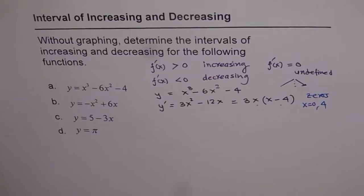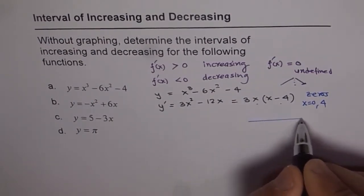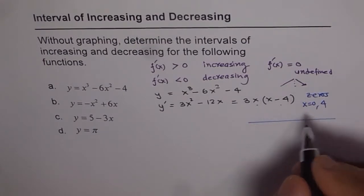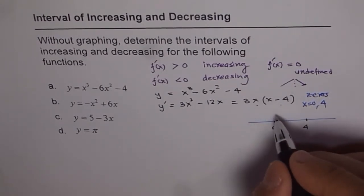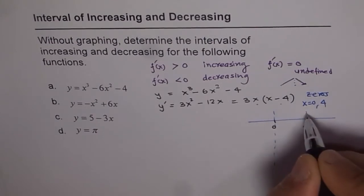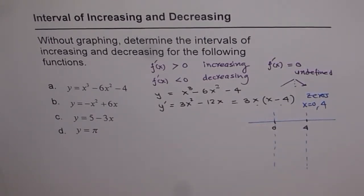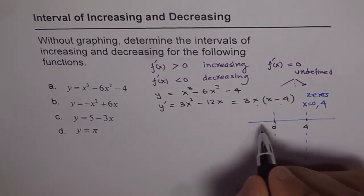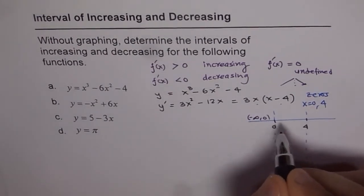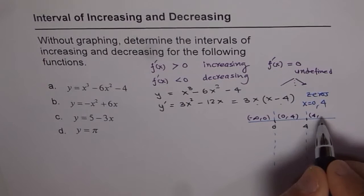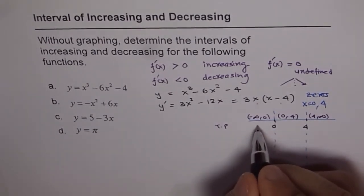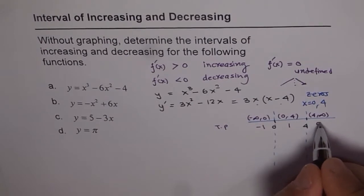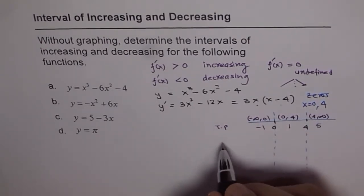Now let's analyze the points near these zeros. We will draw a number line with the zeros: one at 0 and the other at 4. With these zeros, we draw dotted lines forming a kind of table. We are testing the intervals: from negative infinity to 0, from 0 to 4, and from 4 to infinity. The test points could be minus 1, then 1, and 5 in the 4 to infinity interval. Now let's test y'.